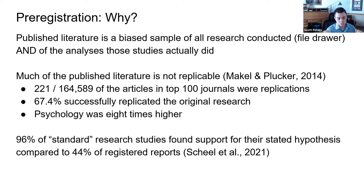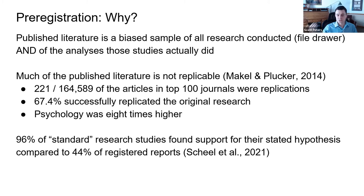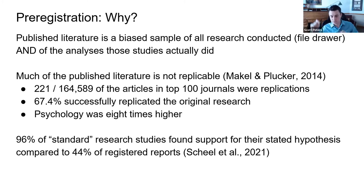When you look at published registered reports — where methods are peer reviewed before the study ever happens — only about 44% of those studies found support for their hypotheses. The difference is that in a registered report, authors aren't able to change their analyses after the fact. They can't see a non-significant result and then tweak the question or the data to get significance.